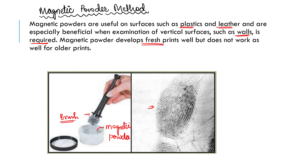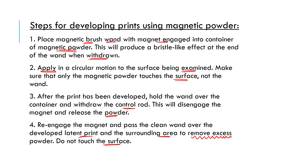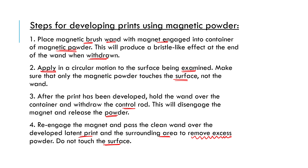So that is the magnetic powder method of fingerprint development. To summarize: use magnetic powder on plastic and leather surfaces, and on any vertical surface. It is most useful for fresh prints compared to older prints. Use the magnetic wand and magnetic brush to develop and enhance the fingerprint. The next method is cyanoacrylate fuming, also known as the superglue method, which will be covered in the next class.